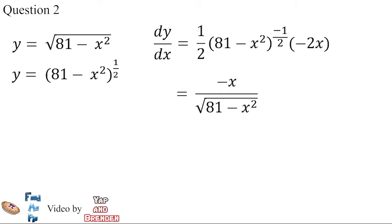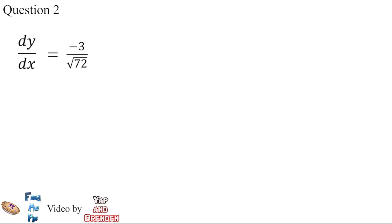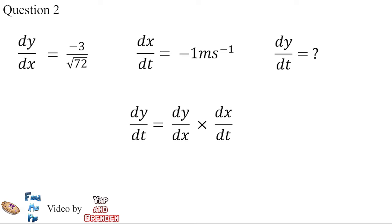Differentiating Y with respect to X, we get negative X over the square root of 81 minus X². Substituting X equals 3 into the equation, we get negative 3 over the square root of 72. We know that dY/dX equals negative 3 over the square root of 72. From the question, we know that dX/dt equals negative 1 meter per second, and we need to find dY/dt. By using the chain rule, we can obtain dY/dt equals dY/dX times dX/dt.